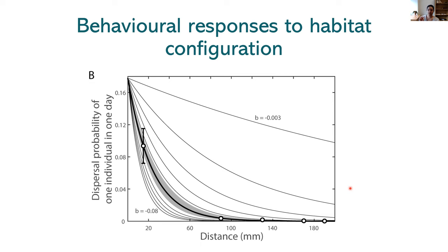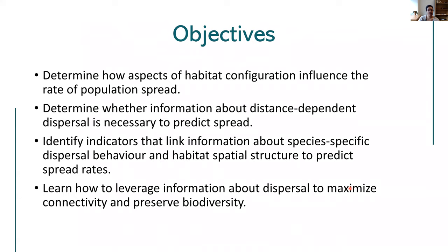We expected that the shape of a species' dispersal kernel would interact with habitat configuration to determine the rate of population spread. We had multiple objectives: to determine how habitat configuration influences the rate of population spread; whether information about distance-dependent dispersal (the dispersal kernel) is necessary to predict spread; and to identify indicators linking information about species-specific dispersal behavior and habitat structure configuration to predict spread rates, making it easy for habitat managers to leverage dispersal information to maximize connectivity and preserve biodiversity.